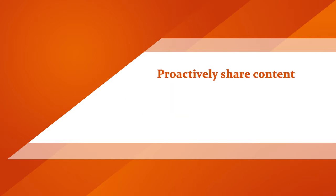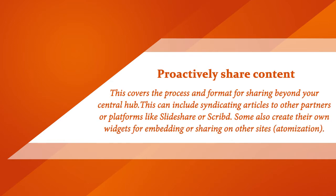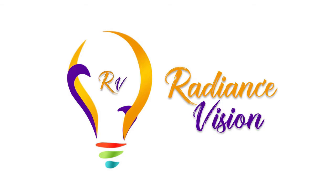Rule 5: Proactively share content. This covers the process and format for sharing beyond your central hub. This can include syndicating articles to other partners or platforms like Slideshare or Script. Some also create their own widgets for embedding or sharing on other sites. Following these steps will help you make the most of your optimization efforts.